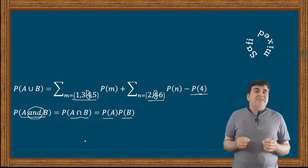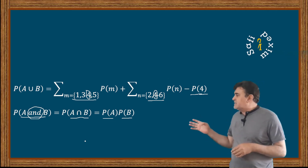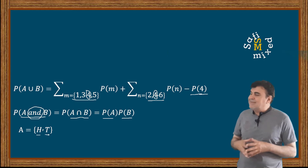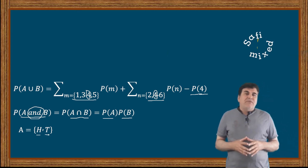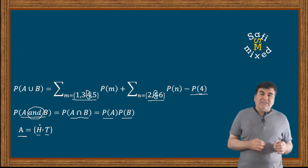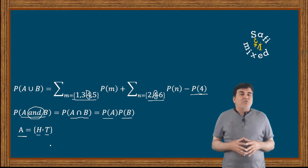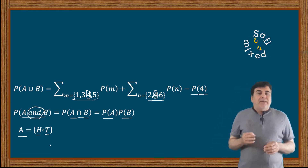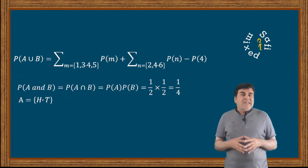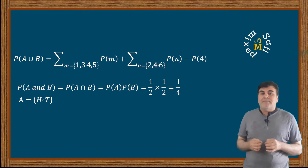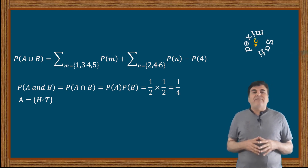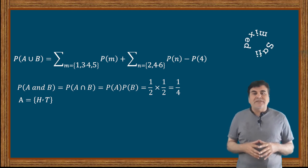For example, tossing a coin has a sample space of two events, usually written as A = {H, T}, where H represents head and T represents tail. If I toss the coin twice, for each toss the sample space has the same two outcomes H and T, making the probability of each outcome equal to one half. According to this equation, the total probability for the outcome of two tosses equals (1/2) × (1/2) = 1/4.